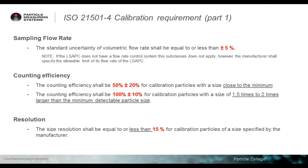Let's start with the main requirements of the calibration standard. Make sure everything I'm listing here is reported by your calibration service center. First, the sampling flow rate. The accepted tolerance for the sampling flow rate is 5% for any instrument which has a built-in flow controller. Any instrument that doesn't employ an internal blower and flow controller doesn't need to respect this tolerance, and in that case the manufacturer provides the specific tolerance range.